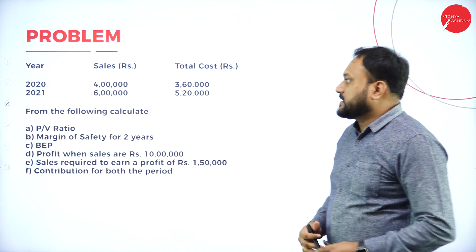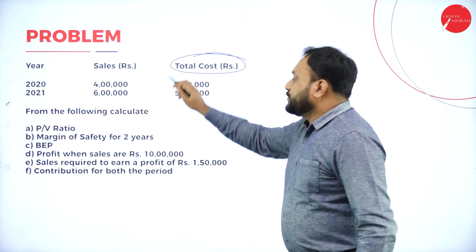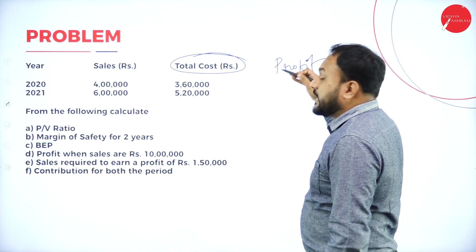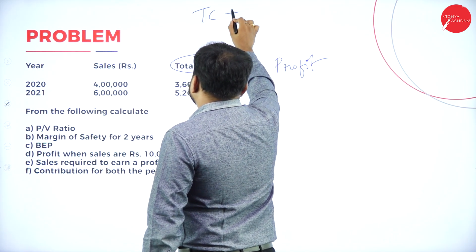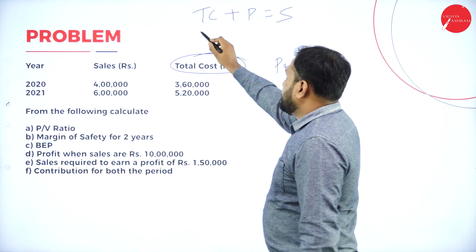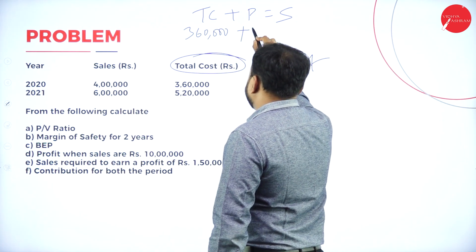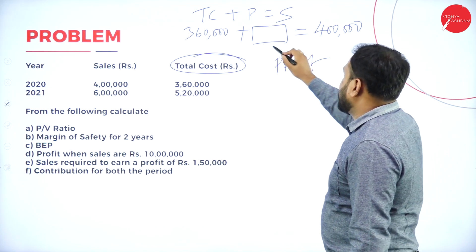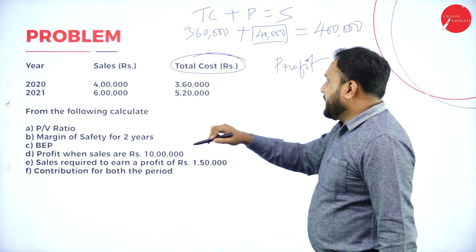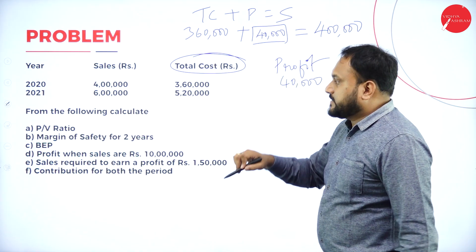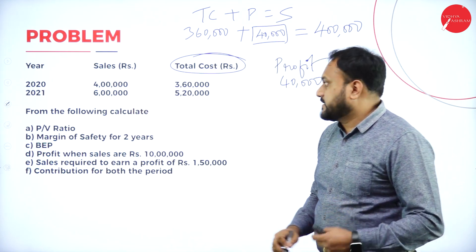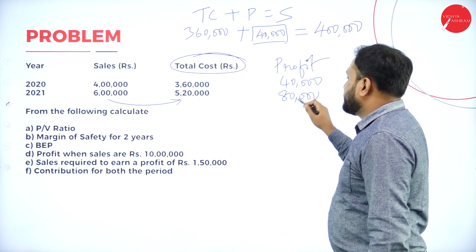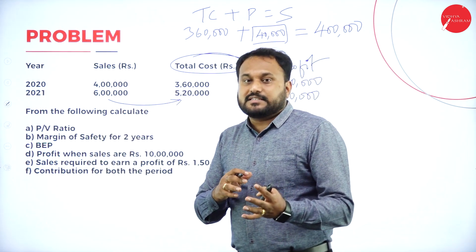They can also give total cost instead of profit. Convert using: Total Cost + Profit = Sales. For example, Total Cost = ₹3,60,000, Sales = ₹4,00,000, so Profit = ₹40,000 (for 2020). For 2021: Sales = ₹6,00,000, Total Cost = ₹5,20,000, so Profit = ₹80,000.